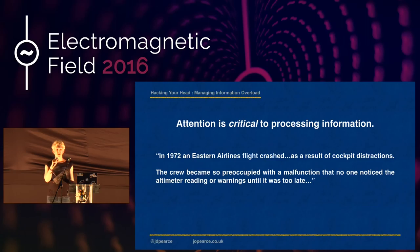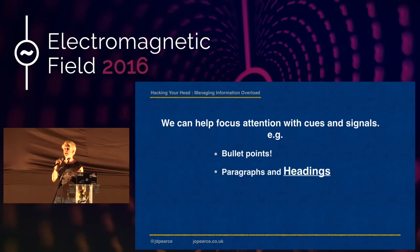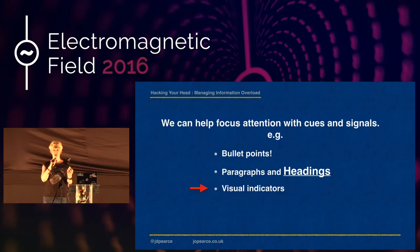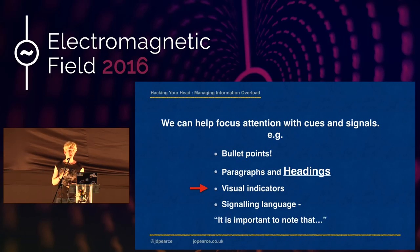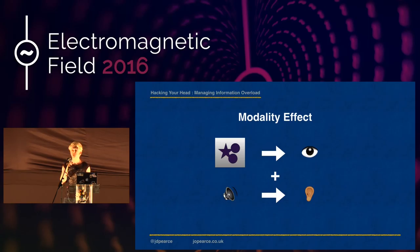We can help focus attention with cues and signals — for example, bullet points, paragraphs and headings, visual indicators like really big red arrows, and signalling language such as saying 'It is important to note that.' We can also help focus attention by leveraging both the visual and auditory components of working memory at once — this is called the modality effect: using both auditory and visual modes.